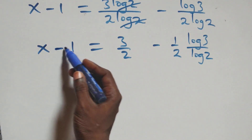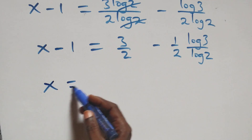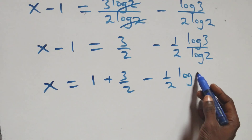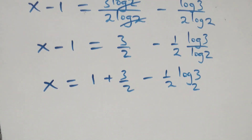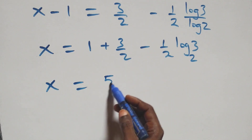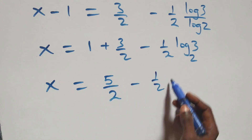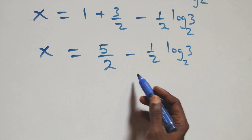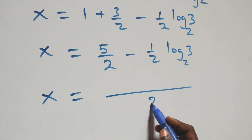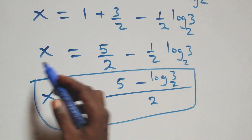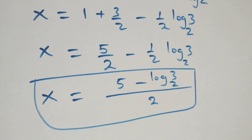We take minus one to the right-hand side, where it becomes plus one. Using change of base, log 3 over log 2 equals log 3 base 2. So x equals 1 plus 3 over 2 minus 1 over 2 log 3 base 2. Adding 1 and 3/2 gives 5/2, so x equals 5 over 2 minus 1 over 2 log 3 base 2, which combines to x equals 5 minus log 3 base 2, all over 2.